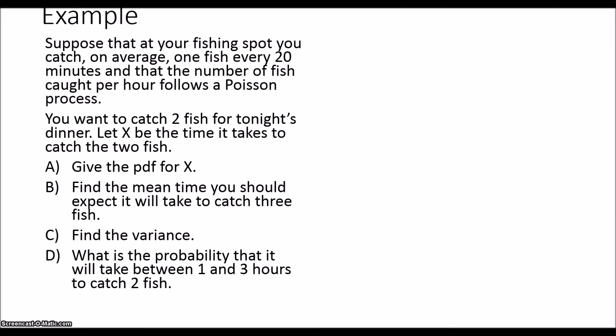So let's take a look at an example. Suppose that at your favorite fishing spot, you catch on average one fish every 20 minutes, and that the number of fish caught per hour follows a Poisson process. You want to catch two fish for tonight's dinner. And we're going to let X be the time it takes to catch the two fish. So the things we're going to do, we're going to find the PDF for X.